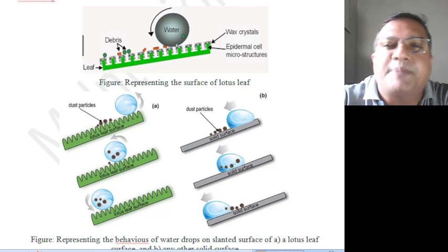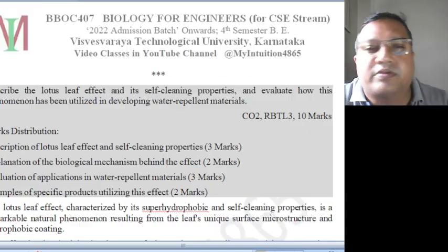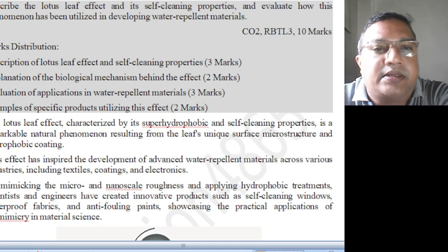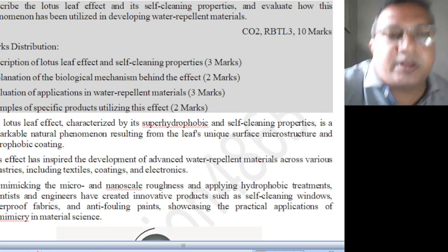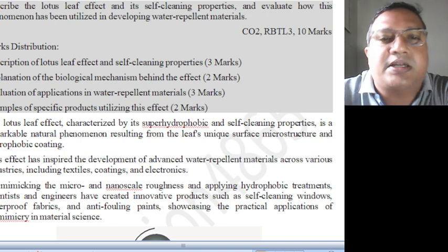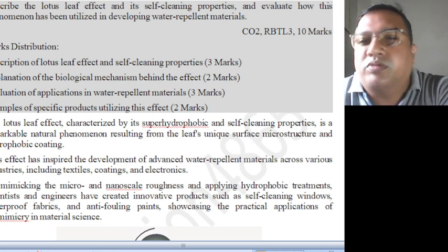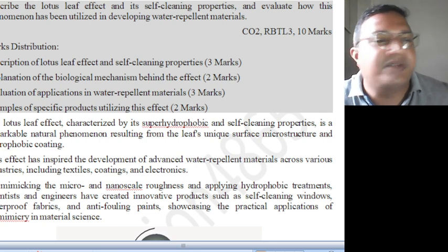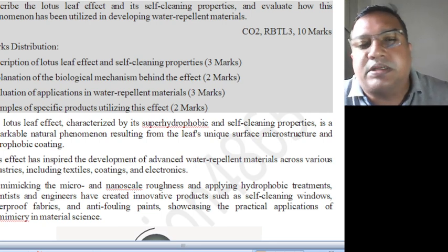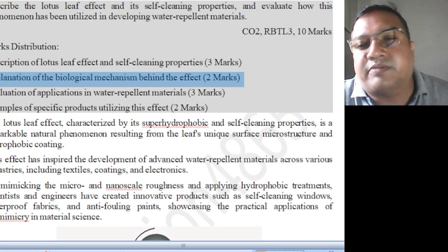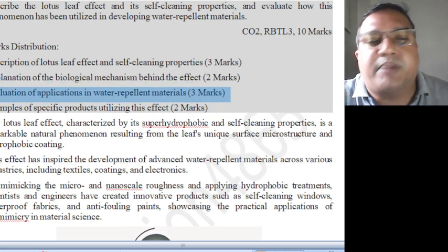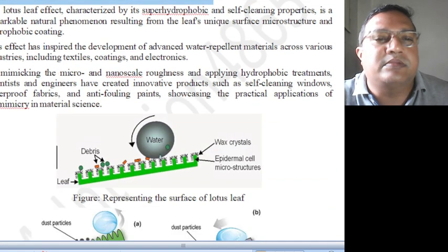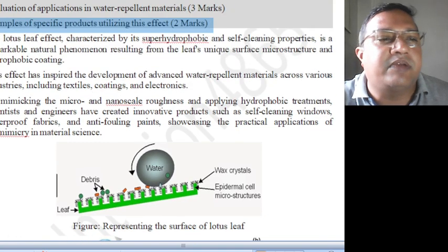This figure represents the surface of the lotus leaf. The question is: describe the lotus leaf effect and its self-cleaning properties, and evaluate how this phenomenon has been utilized in developing water repellent materials. This is connected to course outcome, revised Bloom's taxonomy level 3. The mark distribution is: description of lotus leaf effect and properties — 3 marks; explanation of biological mechanism — 3 marks; evaluation of applications in water repellent materials — 3 marks; examples of specific products — 3 marks.